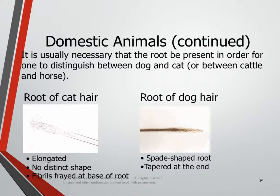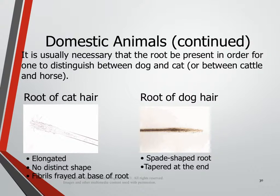You should have the reproduction of the cat hair picture and the dog hair picture on your note sheet — just write down the words underneath. The root of a cat hair tends to be elongated, doesn't have a distinctive shape, almost looks like you've chewed on the end of it, and they tend to fray out at the base — that's what all those little spikes are. That's very characteristic under the microscope. Whereas the root of a dog hair tends to be more of a spade shape, tapered at the end, not frayed and weird looking — it almost looks like it was carved that way.